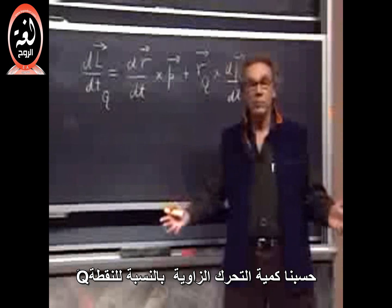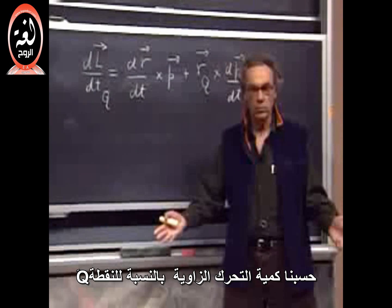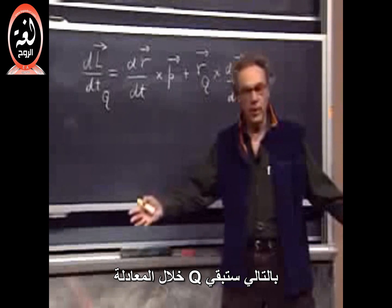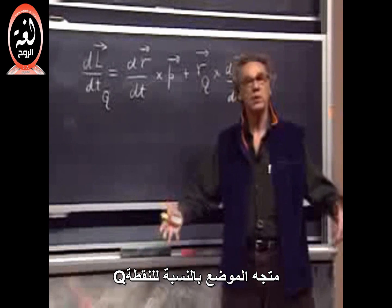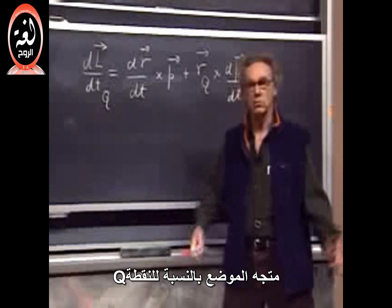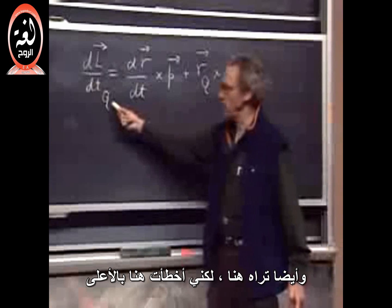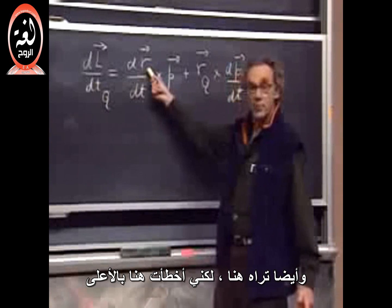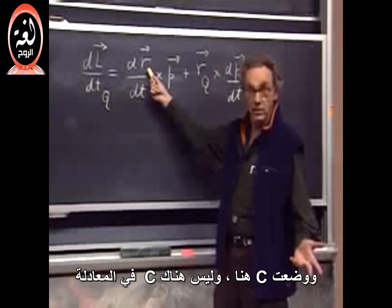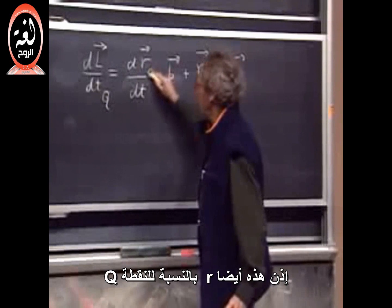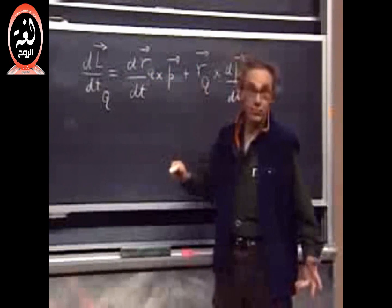We calculate the angular momentum relative to point Q, so the index has to be Q throughout the equation. The position vector relative to point Q. And in this equation, you see the correct index Q here, you see the correct index Q here, but I slipped up here and I put a C there. There is no C in this problem, so this is also R of Q. Sorry for that.